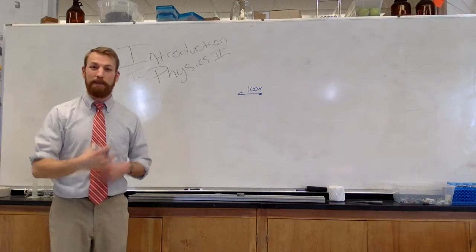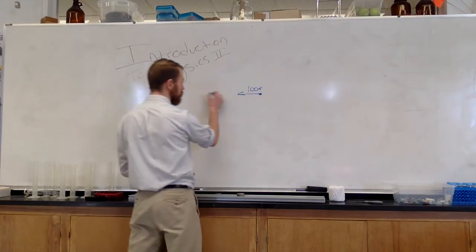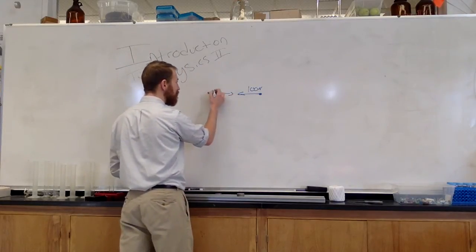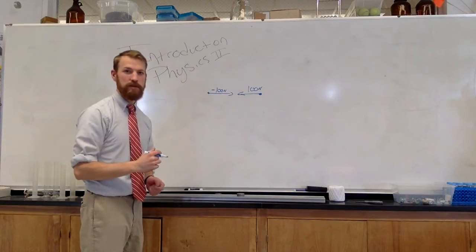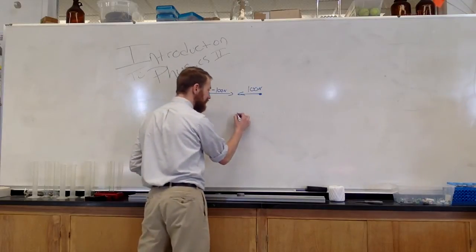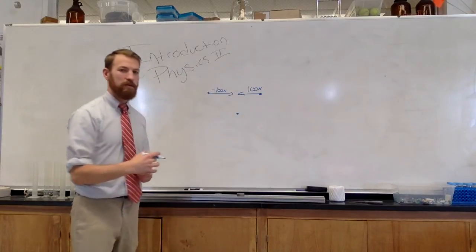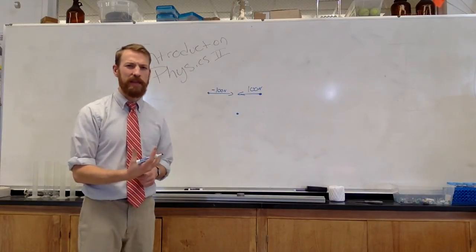Now, to indicate that my force was in the opposite direction, what I can say is that my force was negative 100 newtons. And then these two forces cancel out, and we didn't have really any force on that object.